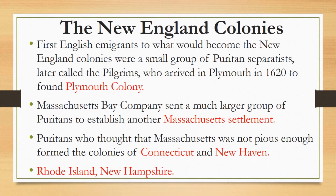The first English immigrants to what would become the New England colonies were a small group of Puritan separatists, later called the Pilgrims, who arrived in Plymouth in 1620 to found Plymouth Colony. Ten years later, a wealthy syndicate known as the Massachusetts Bay Company sent a much larger and more liberal group from Britain to establish another Massachusetts settlement. With the help of local natives, the colonists soon got the hang of farming, fishing, and hunting, and Massachusetts prospered.